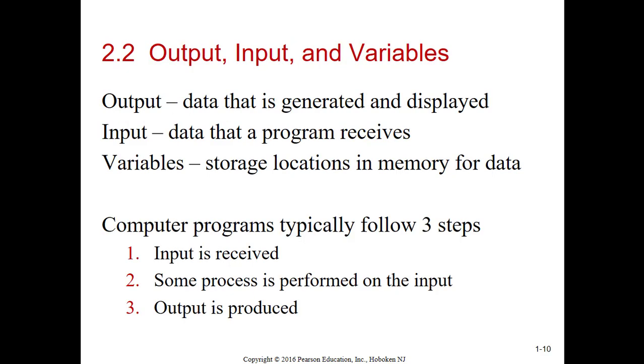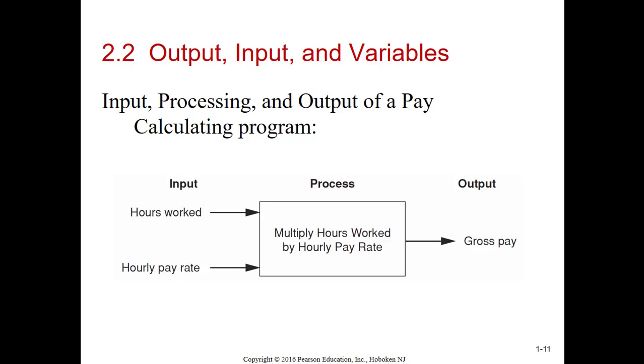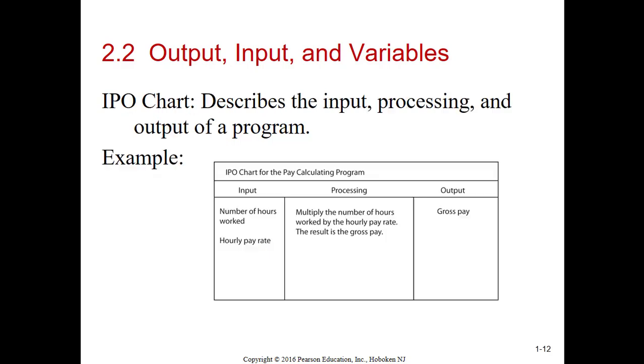Output, input, and variables. Everybody knows what output is - it's data that is generated. Variables are storage locations in memory for data. Computer programs typically follow three steps: you get input, process it, and output it. Not every program you'll process. Not every program you'll get input. Not every program you'll get output. But typically, those three are included in the majority of your programs. In this example, hours worked is the input and hourly pay rate. The process is multiplying it to get the gross pay, and the output is gross pay.